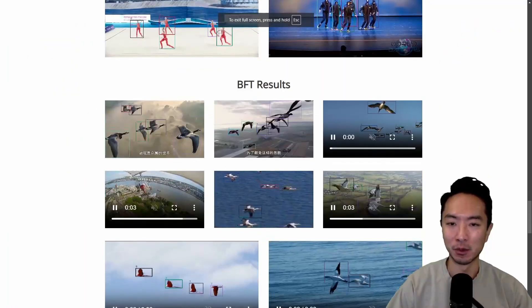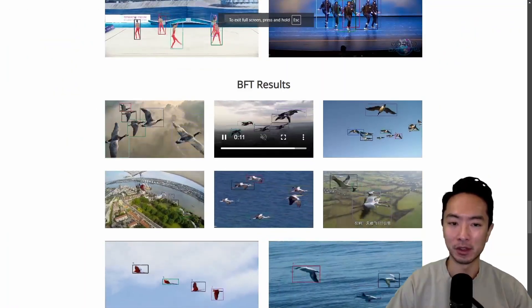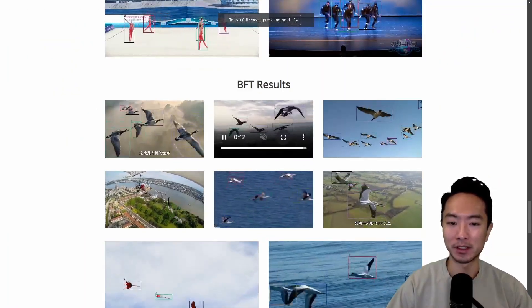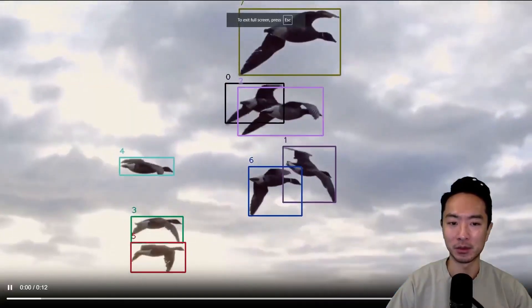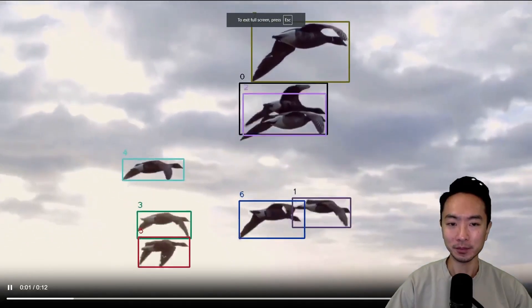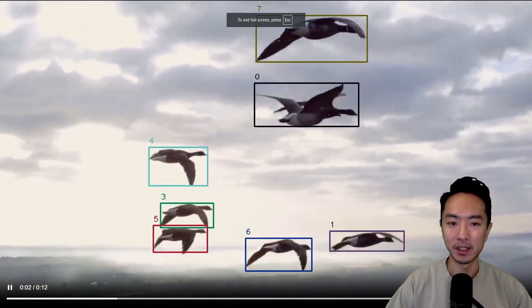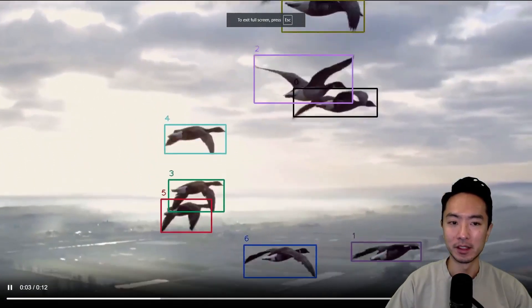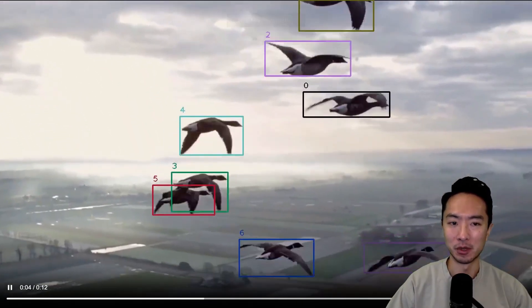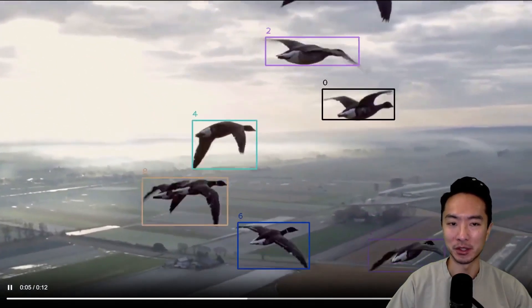Here are a few more examples — this one is with birds flying. Let's take a look at this one. You can see the two birds here, labeled zero and two.